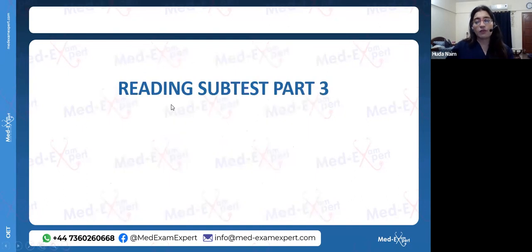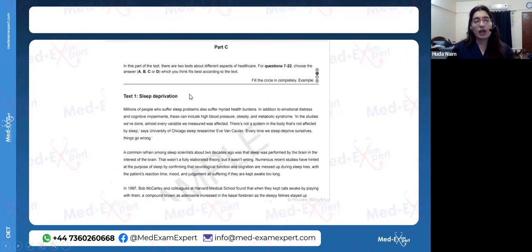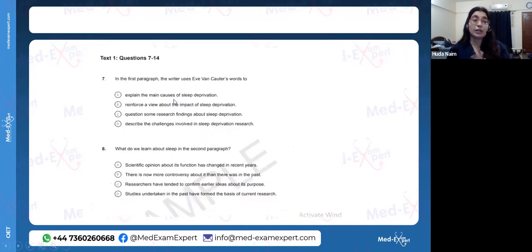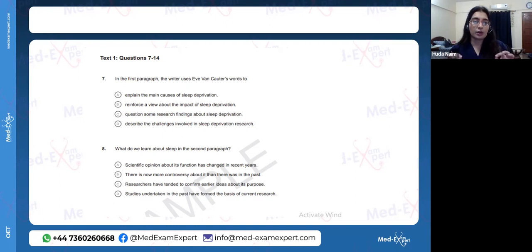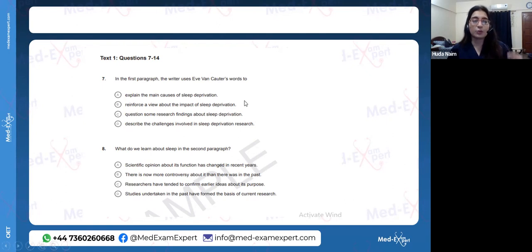Part C of the reading subtest is the trickiest part — a long passage with questions. A key point: do not mark the literal meaning of words. If asked what a particular word means in the passage, you must choose the option that reflects the meaning in context of that passage, not the dictionary definition. Many candidates make the mistake of marking the definition — that is not the correct approach.